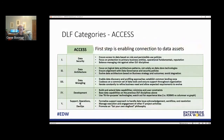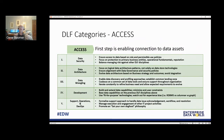The first category is Access — enabling connection to data assets — with five disciplines. One thing to mention: it's a framework, so you don't need to have all 25 disciplines in your organization. You pick the ones that make sense, because some may not apply or you may not be at the right maturity level to implement them, but just know that they're there and you can make use of them.